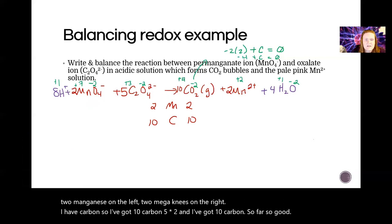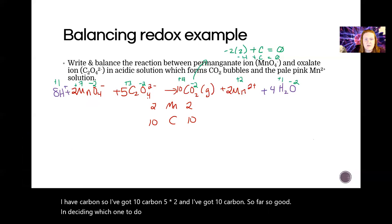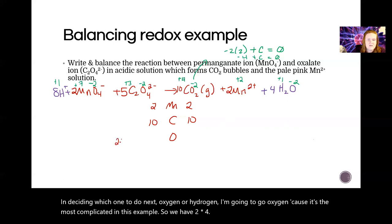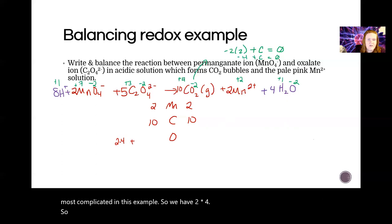In deciding which one to do next, oxygen or hydrogen, I'm going to go oxygen because it's the most complicated in this example. So we have two times four, so it's eight, plus we have five times four, so that's another 20. So 28 all together on the left. On the right, we have 10 times two plus four times one, so we end up with 24. So I actually need four more.